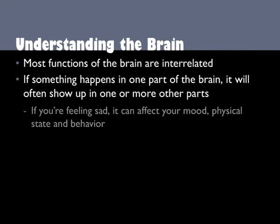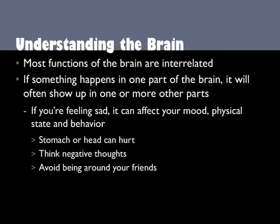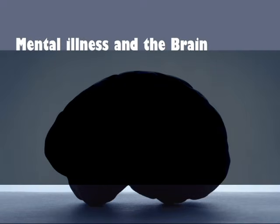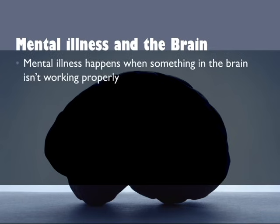For example, if you are feeling sad, it can affect your mood, physical state, and behavior. Your stomach or head can hurt. You can think negative thoughts and avoid being around your friends. How does understanding the brain relate to mental illness? Mental illness happens when something in the brain isn't working properly, or another way of looking at it is when the brain gets sick.